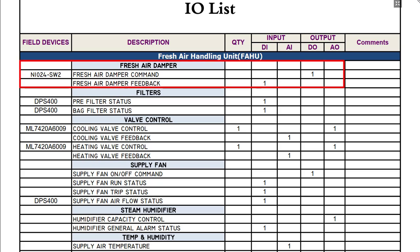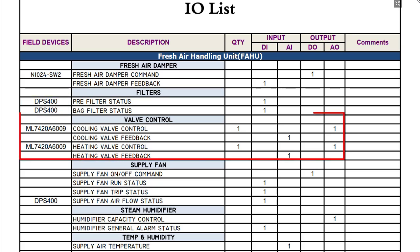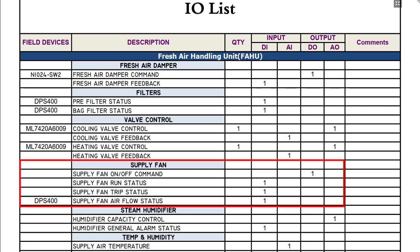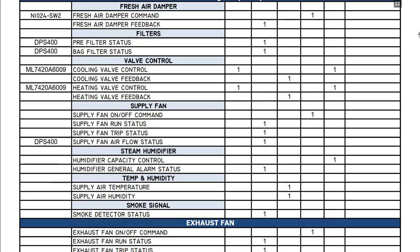First, we have the fresh air damper with command and feedback — these are DO and DI points. Then we have filters: pre-filter and bag filter, using DPS 400 differential pressure switches, both are DI points. Then we have valve control for the cooling valve and heating valve, with feedback monitoring — these are analog output and input points, with the valve actuator model numbers mentioned. Then we have supply fan points: supply fan on/off command, run status, trip status, and airflow status. Similarly, other points are shown. I think you have got the idea of how this IO list is built and what information it contains.